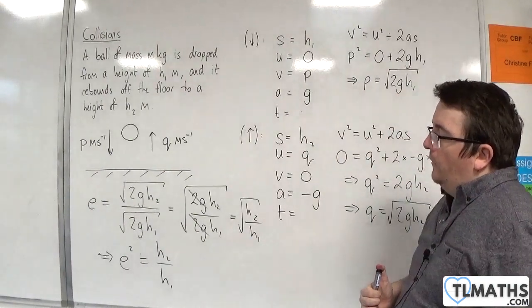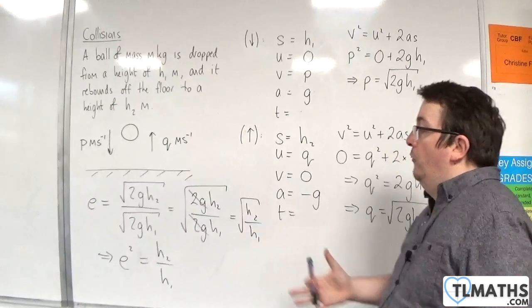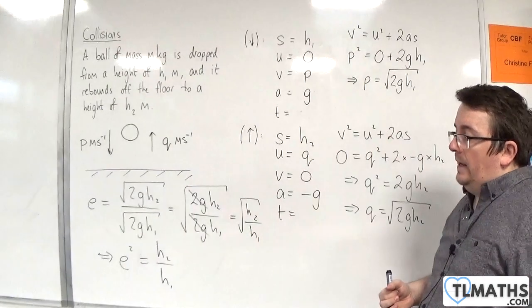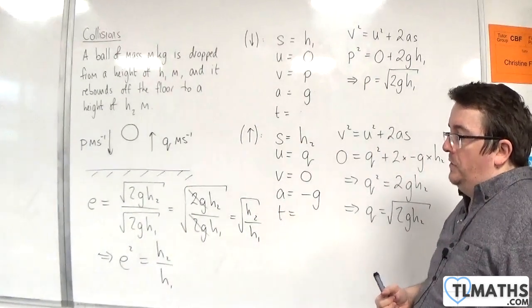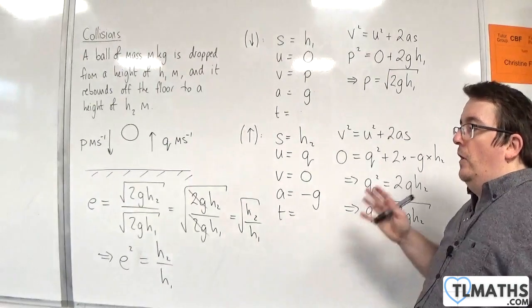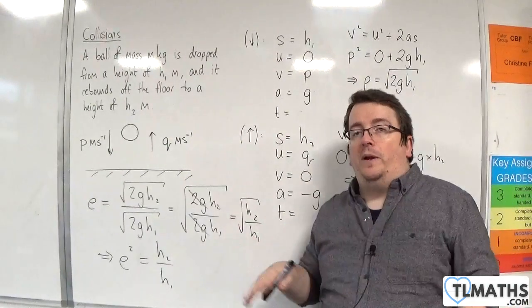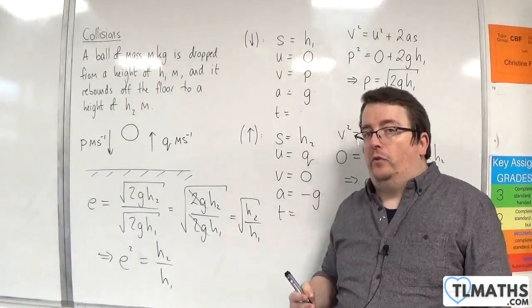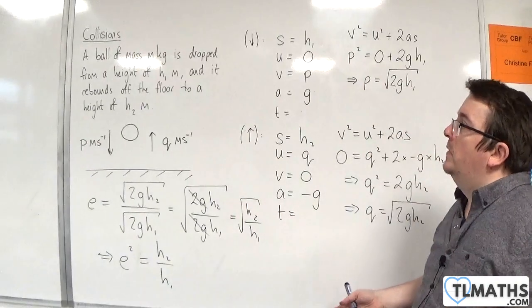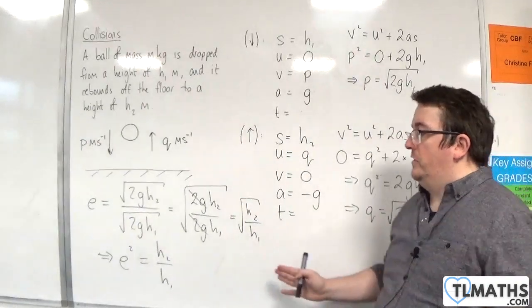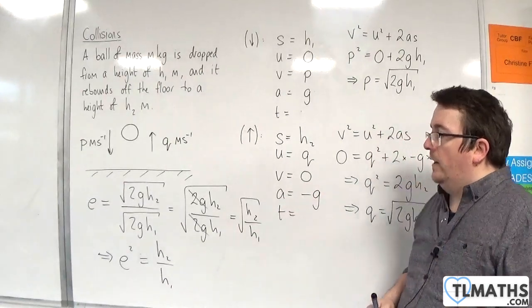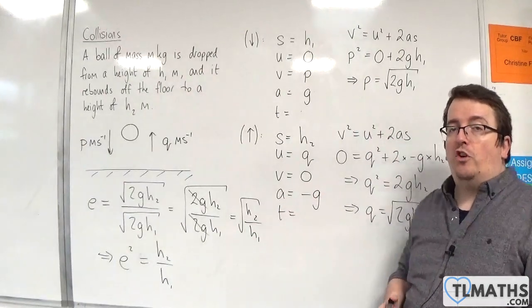And so that gives us a simpler form for finding e in this context. Now this only works when you don't have any resistance forces. So you're treating the ball as a particle and you don't have any resistance forces. But that is how you can calculate the coefficient of restitution in general.